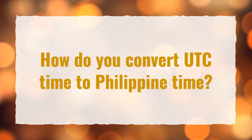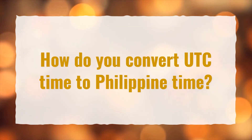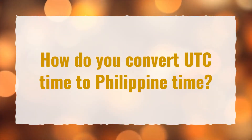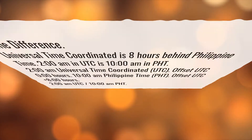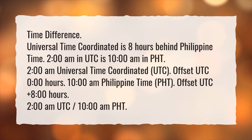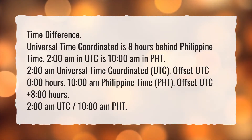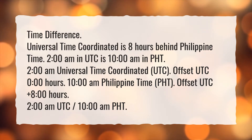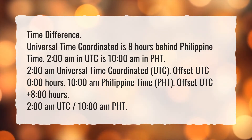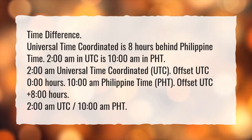How do you convert UTC time to Philippine time? Universal Time Coordinated is 8 hours behind Philippine time. 2 a.m. in UTC is 10 a.m. in PHT.